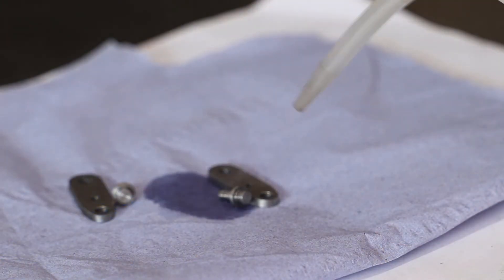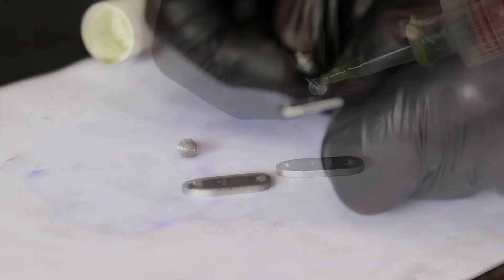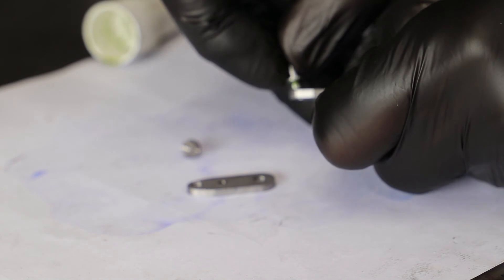And after a good clean with some acetone, I bring the parts together using Loctite 648. Apologies but I didn't lock the focus on the camera so it's all over the place.